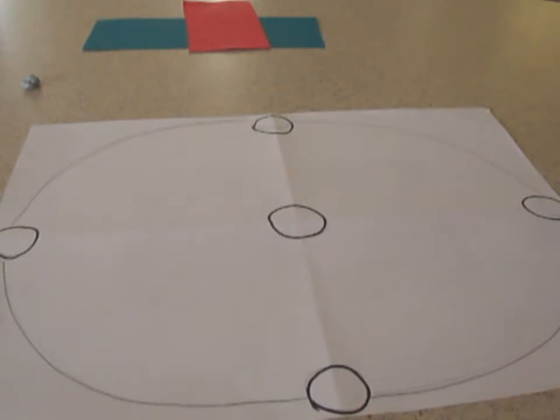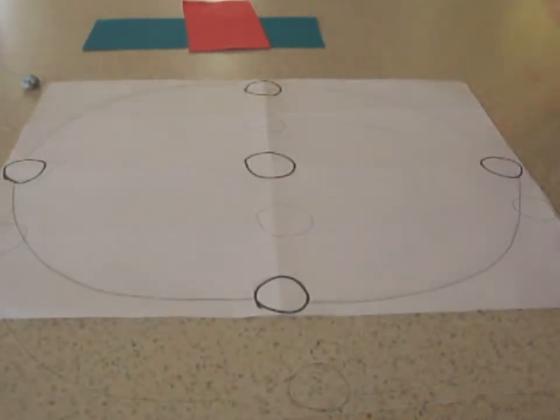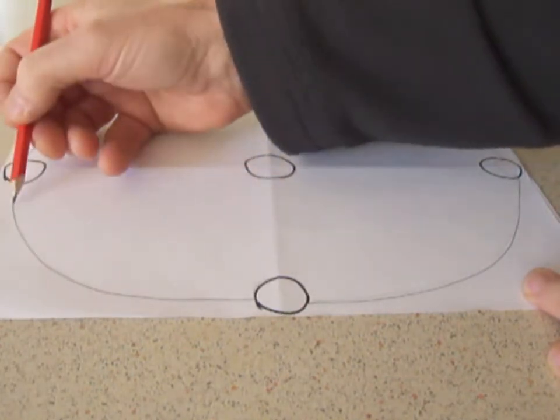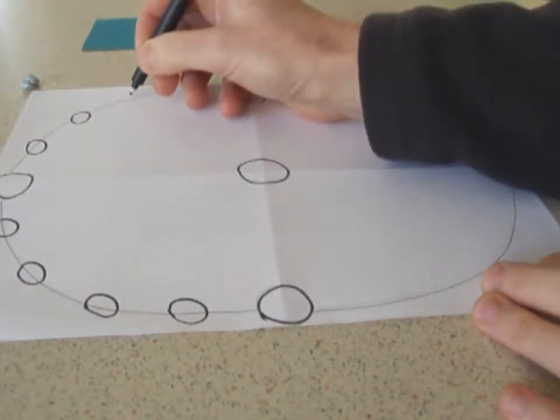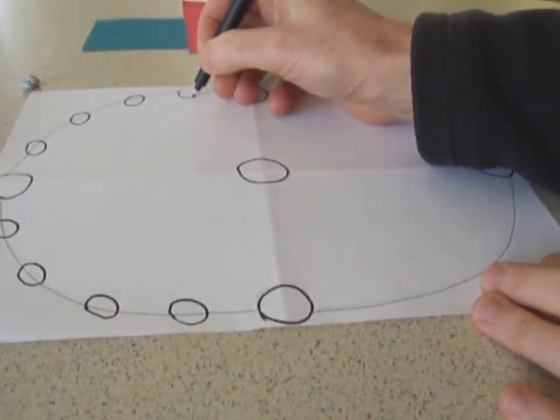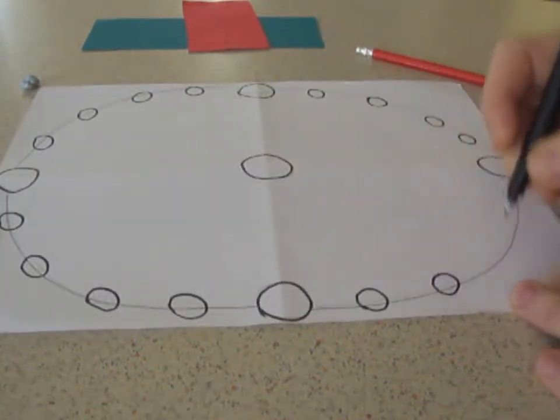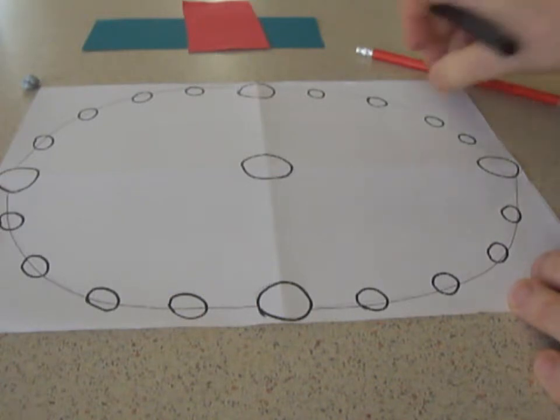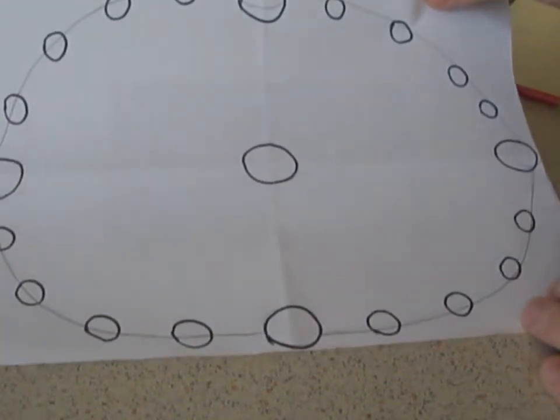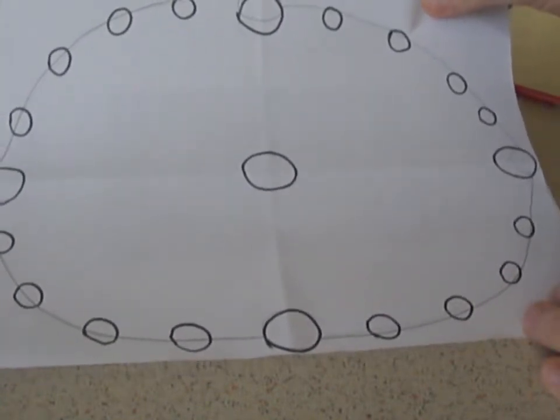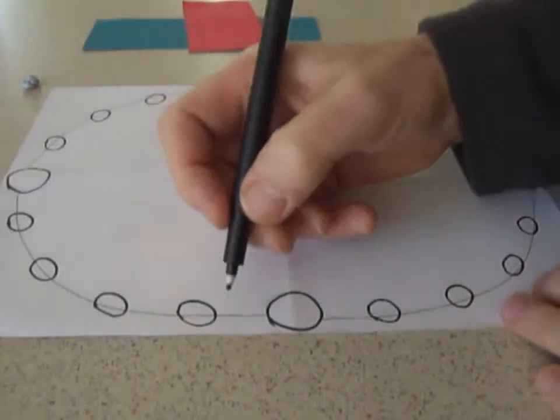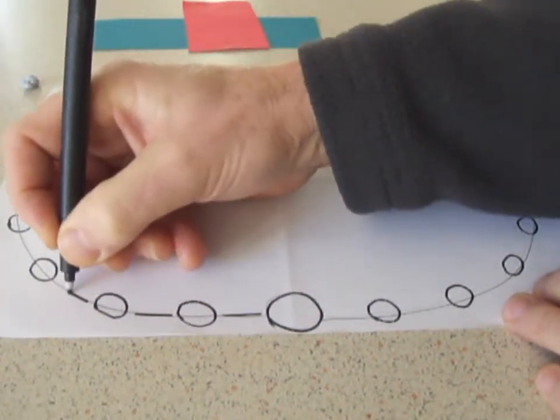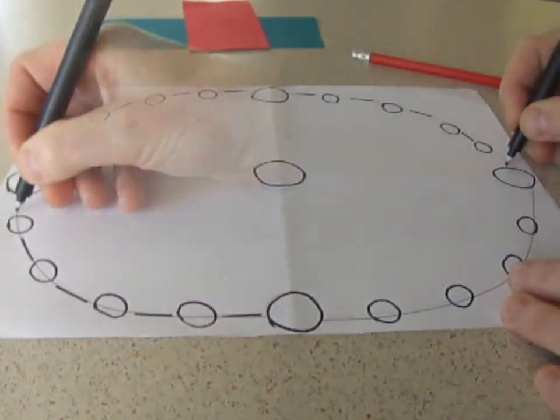Next thing we're going to do is add some more spaces for movement of the counters. Along each section of track here, we're going to put four circles, roughly evenly spaced. So here we have a whole set of circles. A couple of them are a little wonky, but that's the beauty of a homemade board. Between each circle, draw a line, not joining the circle, just indicating that's the track.